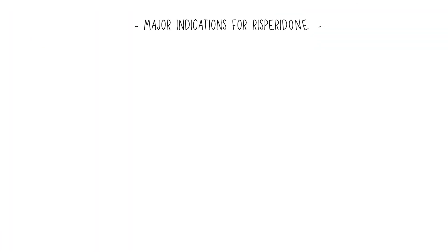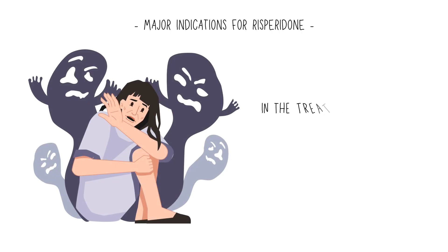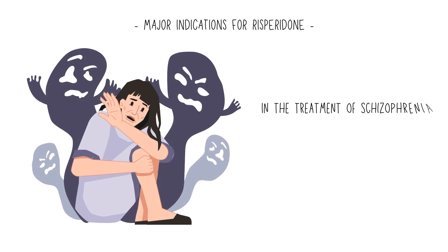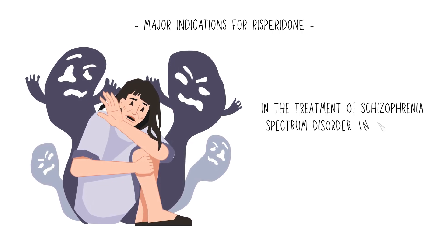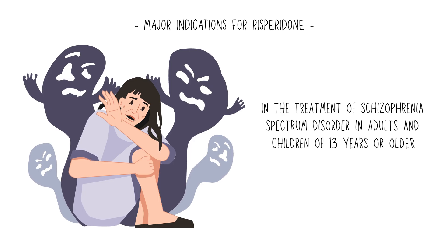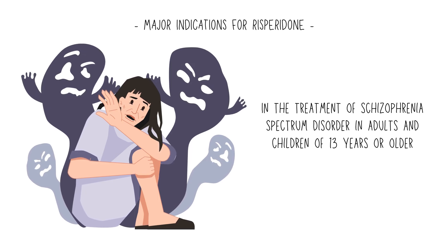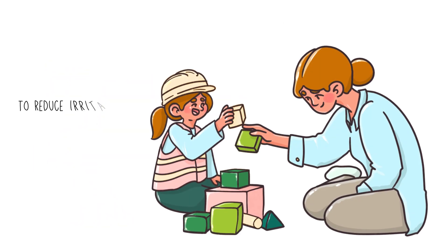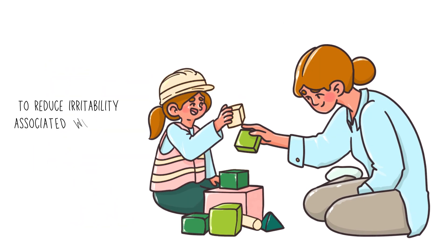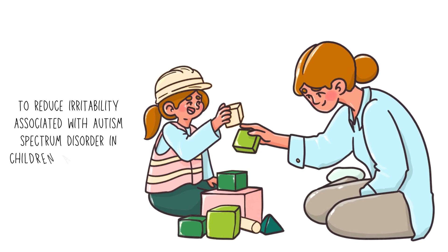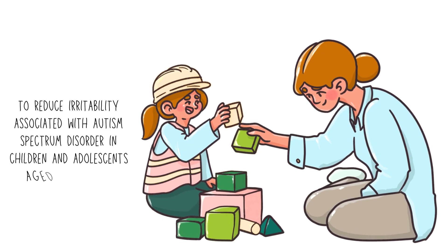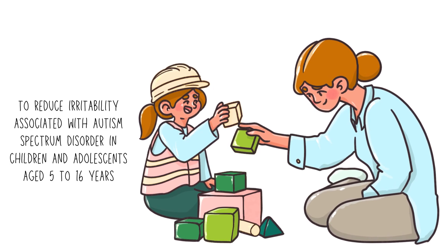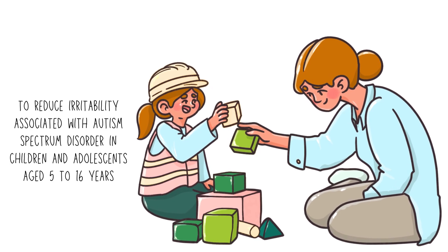Major indications of risperidone include the following: treatment of schizophrenia spectrum disorder in adults and children aged 13 years or older, and reducing irritability associated with autism spectrum disorder in children and adolescents aged 5 to 16 years.